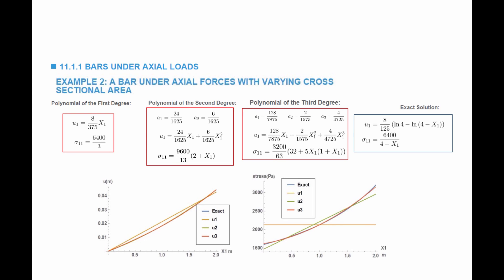Looking at the stresses: the exact solution is the blue line. A first-degree polynomial for the displacement gives a constant stress — an average stress distribution. A second-degree polynomial gives a linear stress. With a third-degree polynomial, the stress is closer to the exact solution. The approximate solution gives better approximation for the displacement, but higher-order polynomials are needed to approximate the stresses.